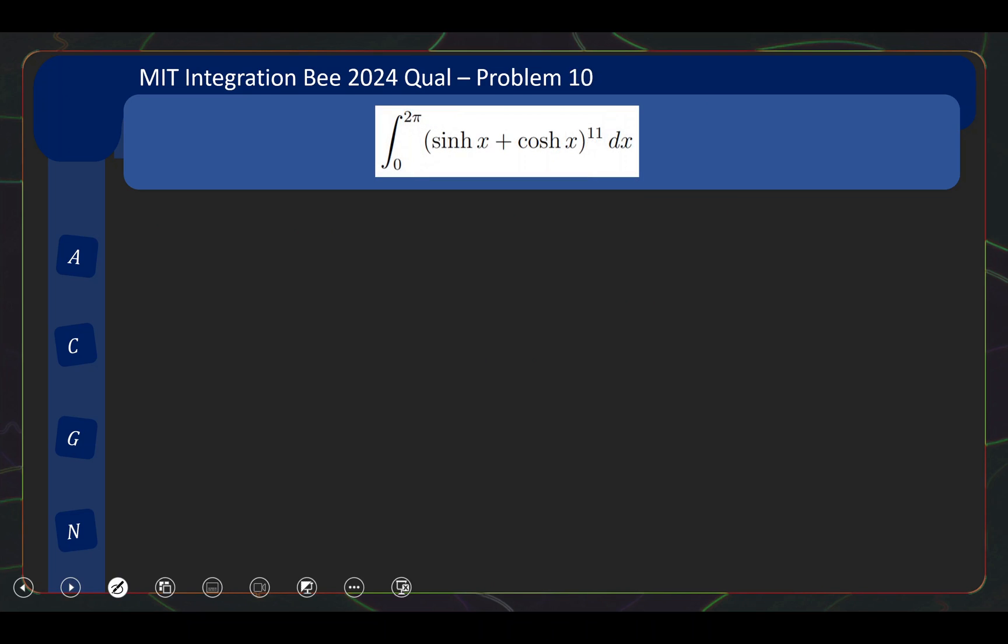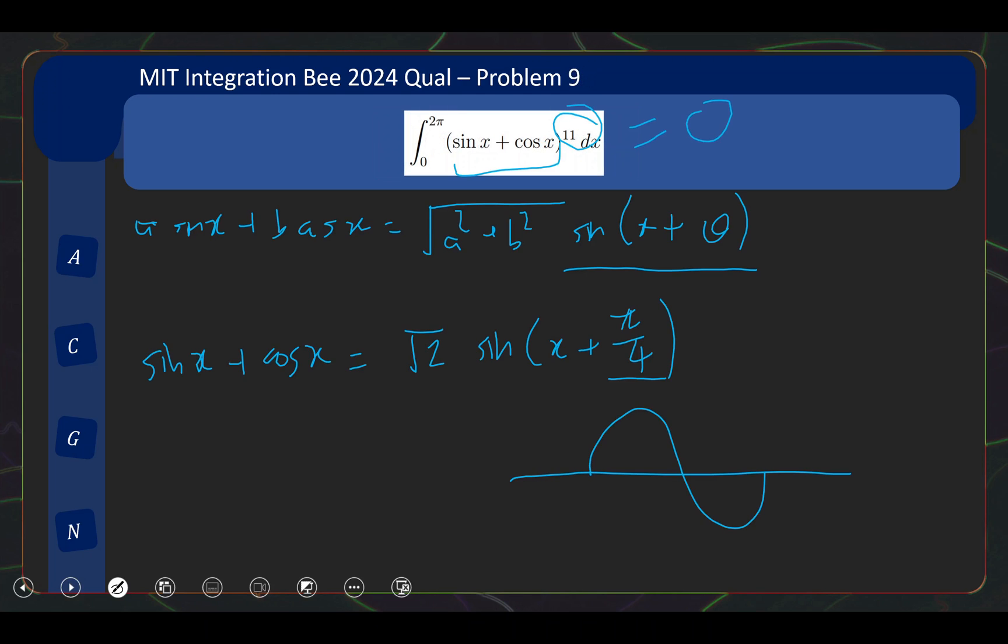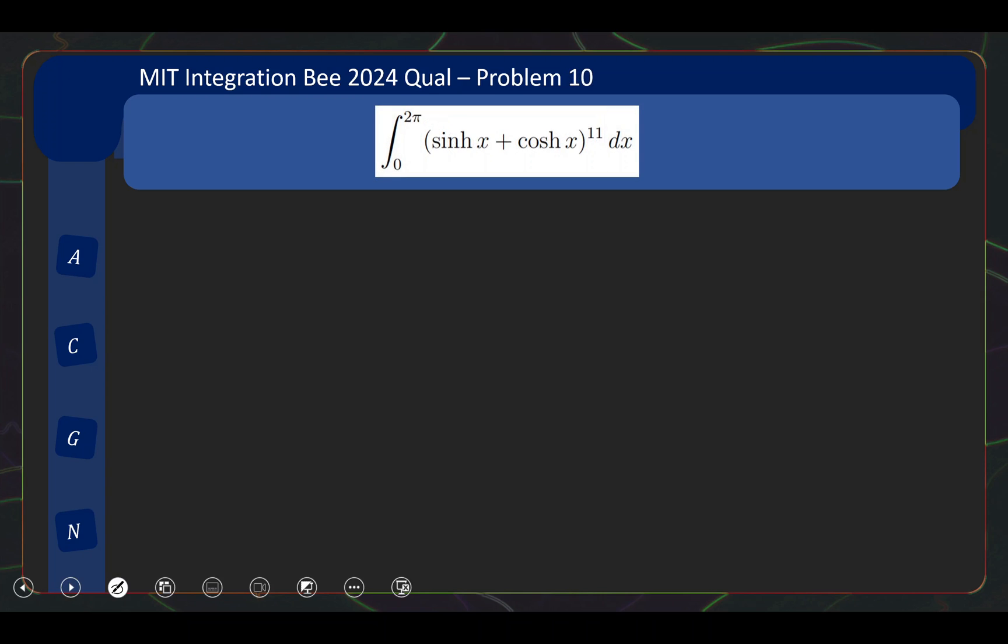So now let us take a look at problem 10, which is very cute because problem 9 is (sin x + cos x)^11 and problem 10 is (sinh x + cosh x)^11. But there's again no relation to problem 9. So the way to do this is you simply use the formula for hyperbolic sine and hyperbolic cosine. It's quite straightforward. Hyperbolic sine and hyperbolic cosine, one of them is this, the other one is this. And basically you take the sum, you're just going to get e^x. So if you take e^x to the power of 11, what you are after is the integral from 0 to 2π of e^(11x) dx. And I'm sure you'll be able to work this out. So I'll leave this problem again in your good hands.